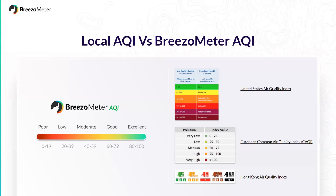The average Joe does not know what 200 ppb means, and in order to translate this to a language where everyone can understand, we take concentrations — or the different governments take concentrations — and translate them to an index. This index can vary; for example, in the U.S. it goes from 0 to 500, and in Hong Kong it goes from 1 to 10. It can vary from one country to another.